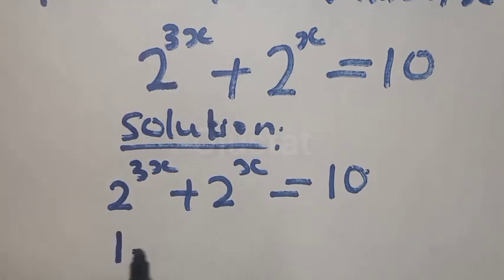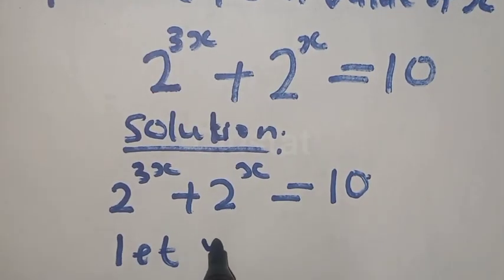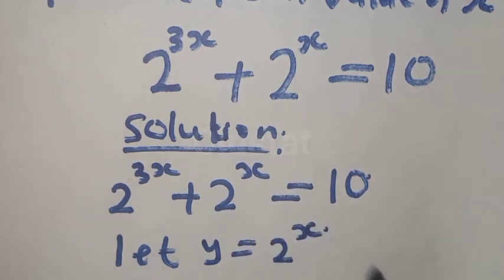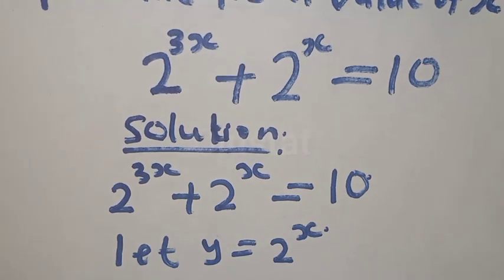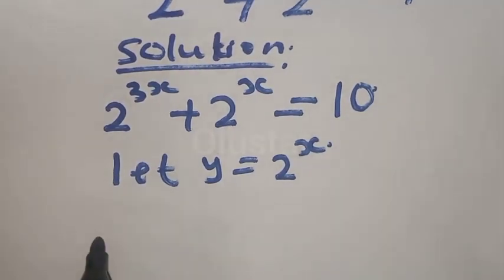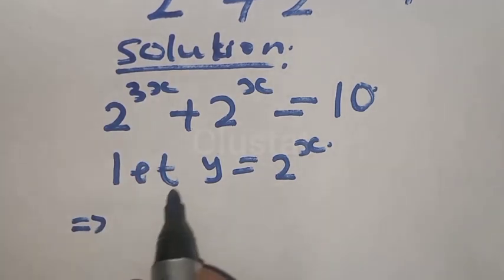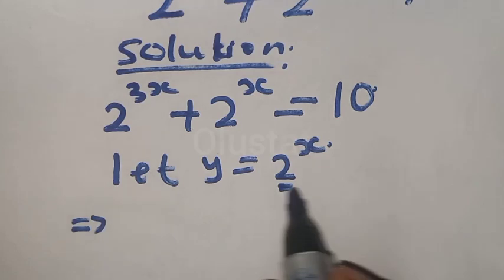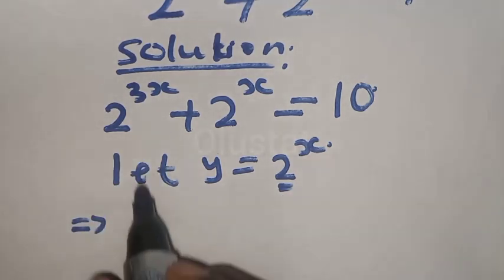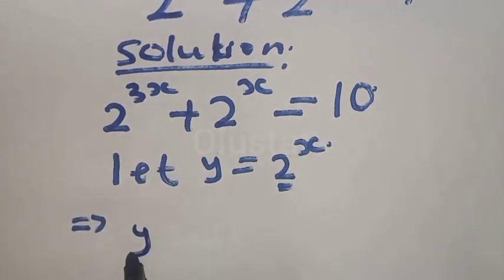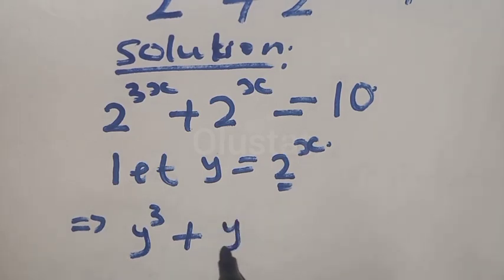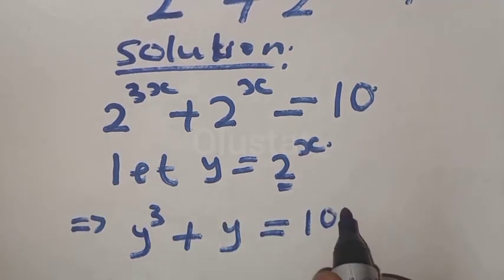Let y be equal to 2 raised to power x. This implies that y cubed is equal to 2 raised to power 3x. That is, anywhere you see 2 raised to power x, you put y there. Then we have y raised to power 3 plus y is equal to 10.